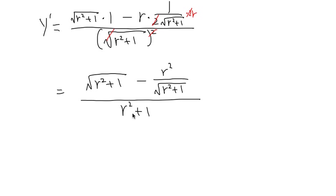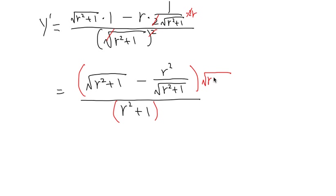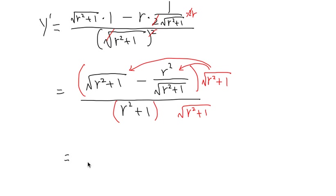Now look at this and ask yourself: how many fractions do you see? You have a small fraction inside the big fraction — you have a complex fraction. So the strategy is to multiply the top and bottom by the LCD, which is square root of r squared plus 1. Do that to the top, do that to the bottom, and then distribute.